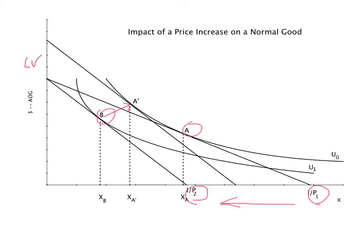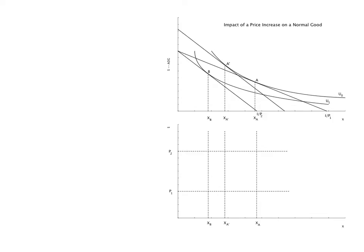To derive the Marshallian and compensated demand curves, we draw the P-Q diagram directly under the indifference curve diagram taking care to make sure the x-axis is identical. P1 is the low price, P2 is the high price. Use the dashed lines to plot the three points in P-Q space corresponding to the three points in the indifference curve diagram shown above.